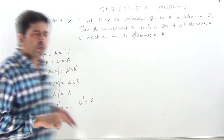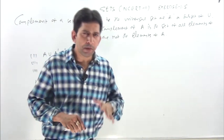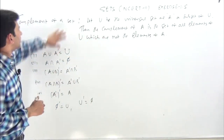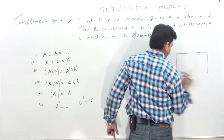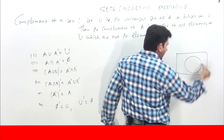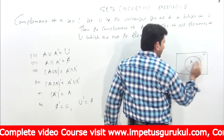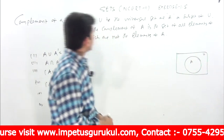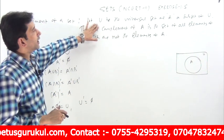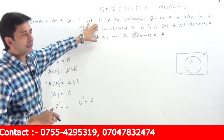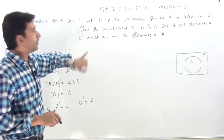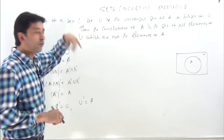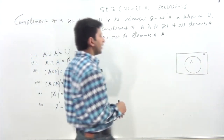Next exercise: 1.5. Simple exercise again — complement of a set. Let U be the universal set and A a subset of universal set. Then the complement of A is the set of all elements of the universal set which are not elements of A, denoted by A dash.